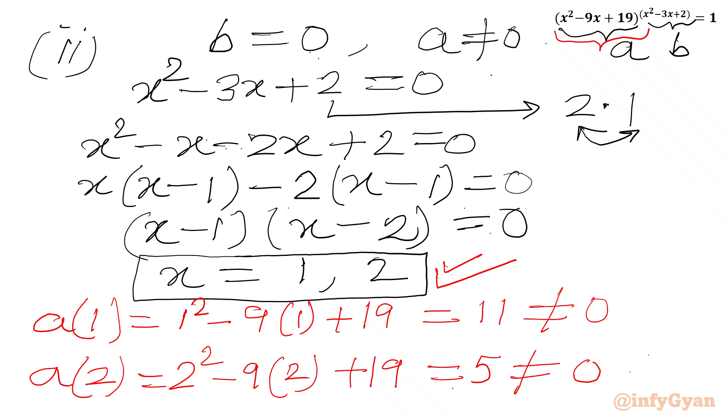Now we have to consider third case. Case 3. This was a equal to negative 1 with power should be even number. Let's put a equal to negative 1. So I will write x square minus 9x plus 19 equal to negative 1. x square minus 9x plus 19 plus 1 equal to 0.